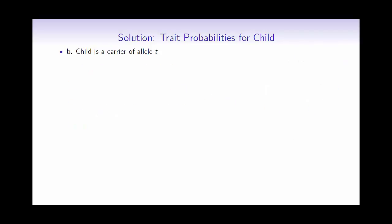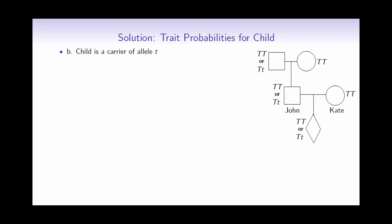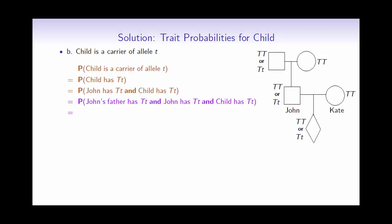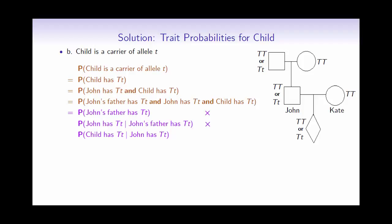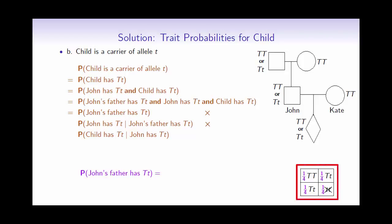Now let's compute the probability that the child is a carrier of Tay-Sachs, meaning the child is heterozygous. For this, John must have been heterozygous, and for that to happen, John's father must also have been heterozygous. We use the chain rule for three events since they are not independent. To compute the probability that John's father is heterozygous, recall that both his parents were carriers. Each outcome in the Punnett square has probability one-quarter, but we also know John's father did not die of Tay-Sachs, so we need a conditional probability.